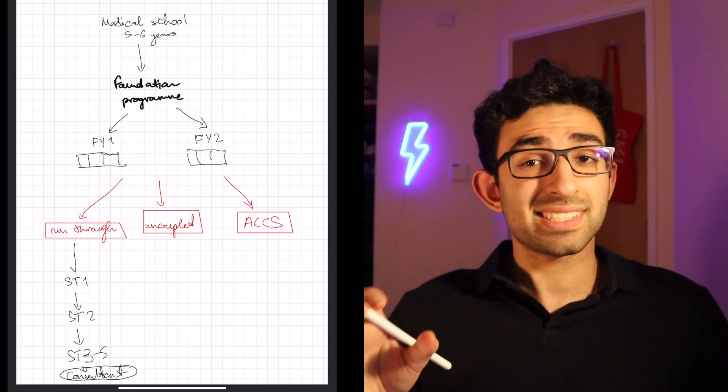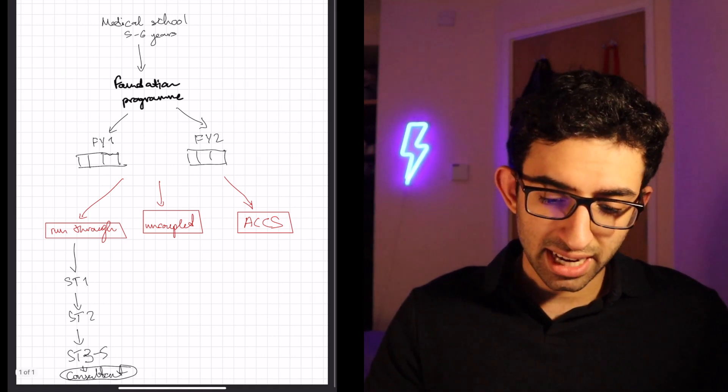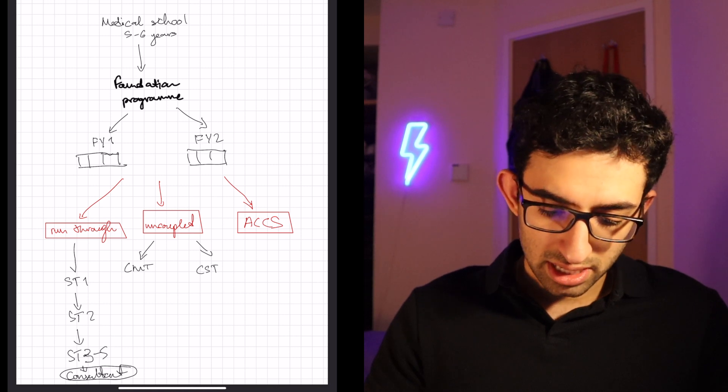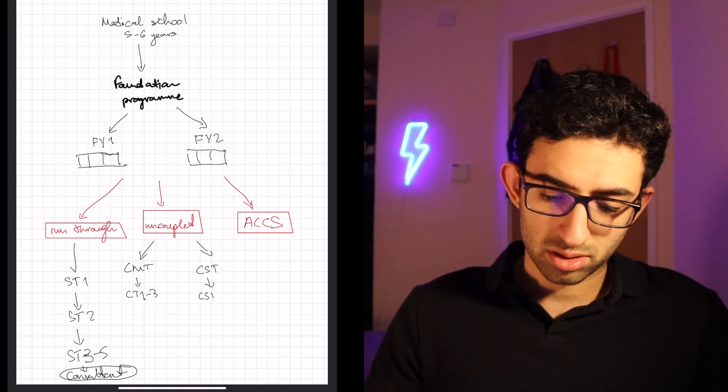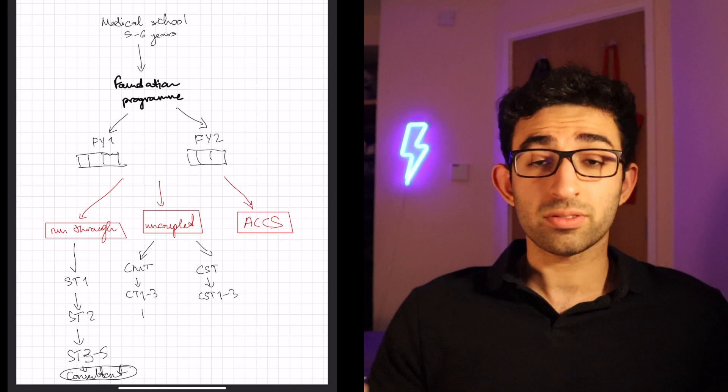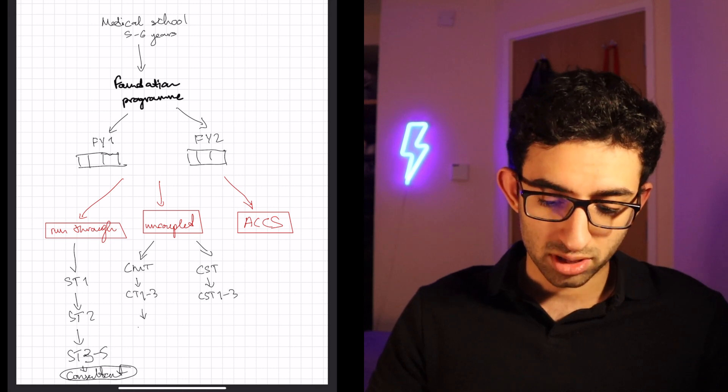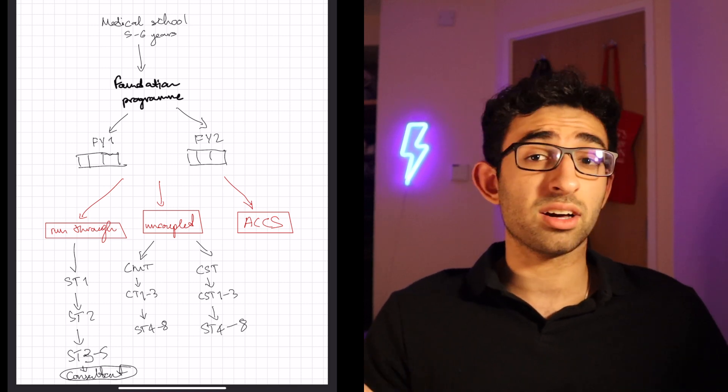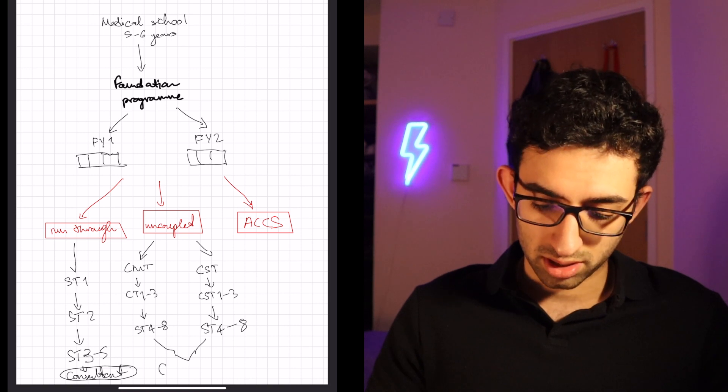An uncoupled program is slightly different. Here, you have to make only a very simple choice early on. You have to decide between core medical training and core surgical training. And here, you have to complete CT1 to 3. That's 2 or 3 years. And CST1 to 3. And after that, you start off from a specialty training year according to how many core training years you've done. So, if you've done 3 years of core training, you start from ST4 and maybe go up to ST8. Similar, it's similar for surgery. That's usually how many years there are of specialty training. And then, obviously, in both cases, you become a consultant.